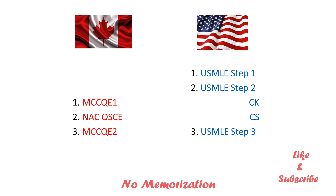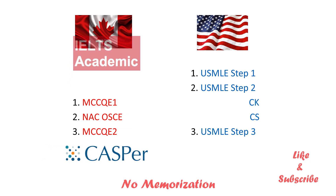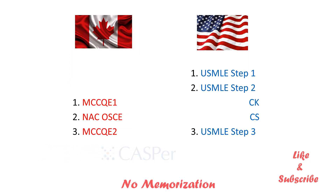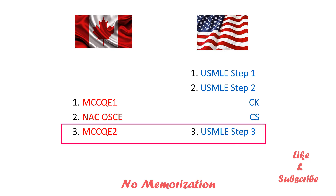Now let's look at the minimum requirements for residency applications in Canada and the USA. MCCQE1 and NACOSCE are required for Canadian residency, and candidates also need a score of 7 in each component and a CASPer test for some provinces. For US residency, USMLE Step 1 and Step 2 are required. However, passing MCCQE2 or USMLE Step 3 before applying will absolutely increase the chance of securing a residency position.